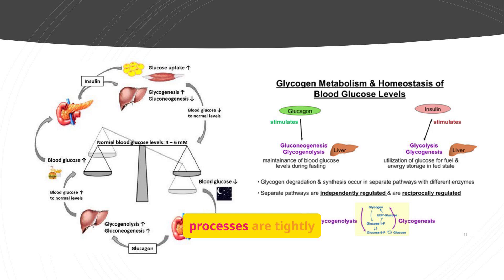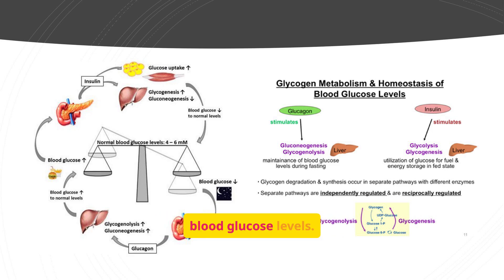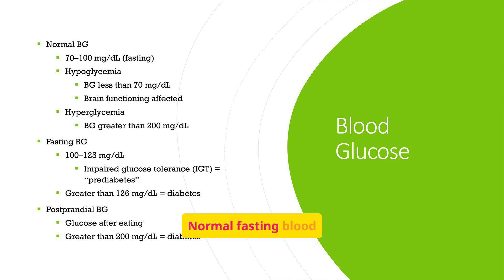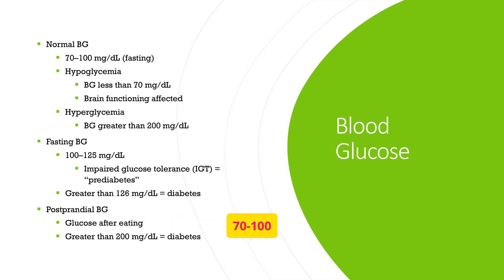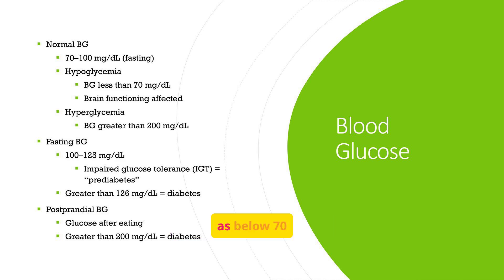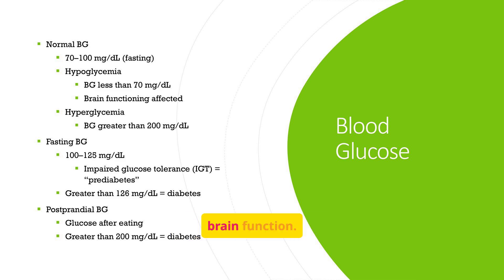Normal fasting blood glucose levels are between 70–100 mg/dL. Hypoglycemia is defined as below 70 mg/dL, which can impair brain function. Hyperglycemia is above 200 mg/dL. Impaired glucose tolerance, or prediabetes, is indicated by a fasting blood glucose between 100–125 mg/dL.